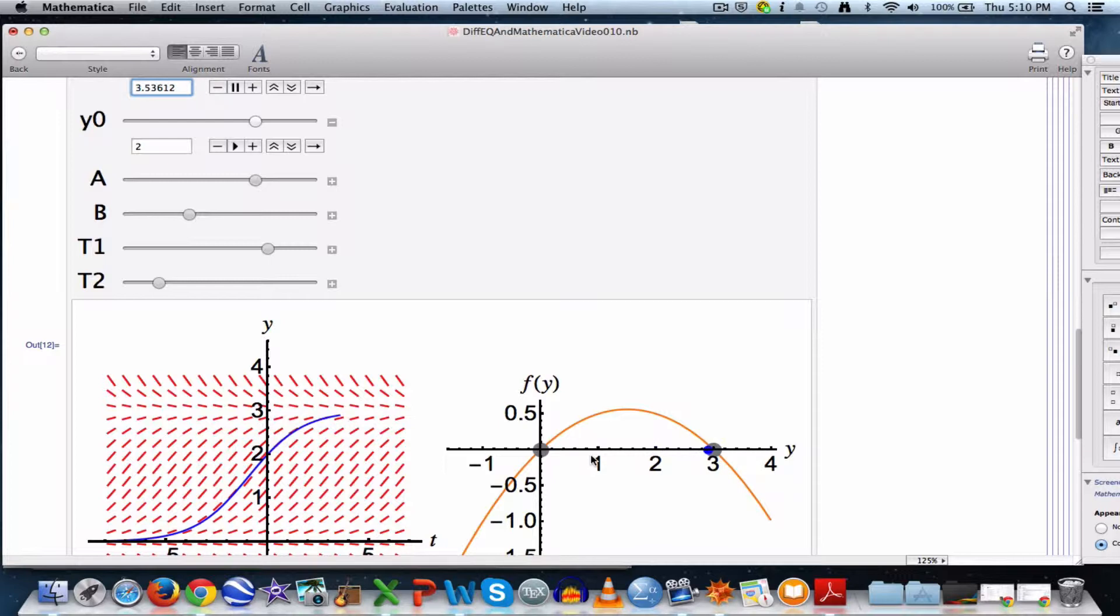Those two numbers, 0 and 3, correspond to what are called equilibrium points on this horizontal y-axis, this phase line it's called. They correspond to the values of y that make f of y 0. Remember, f of y was 1 fourth y times 3 minus y. That's going to be 0 when y is 0 or y is 3. That, again, is equilibrium points on that phase line.